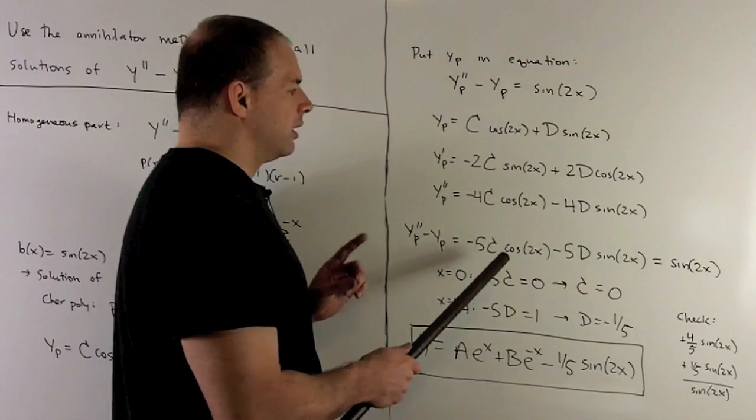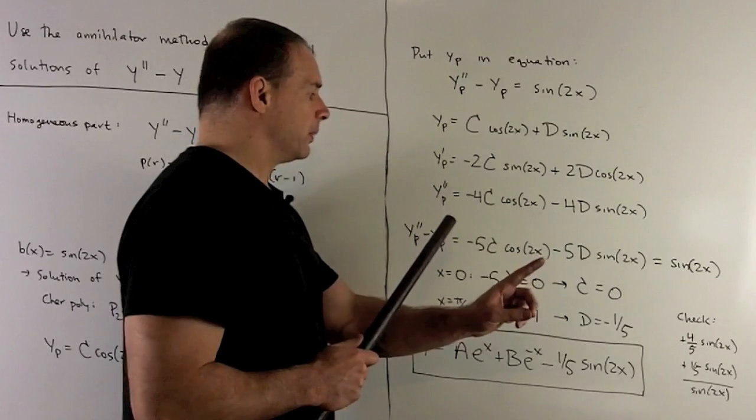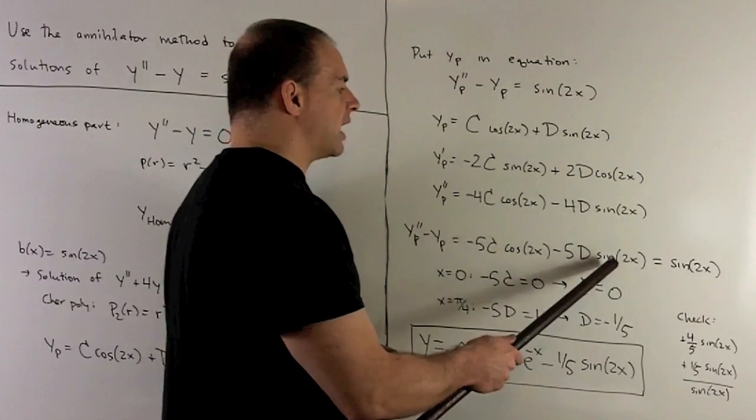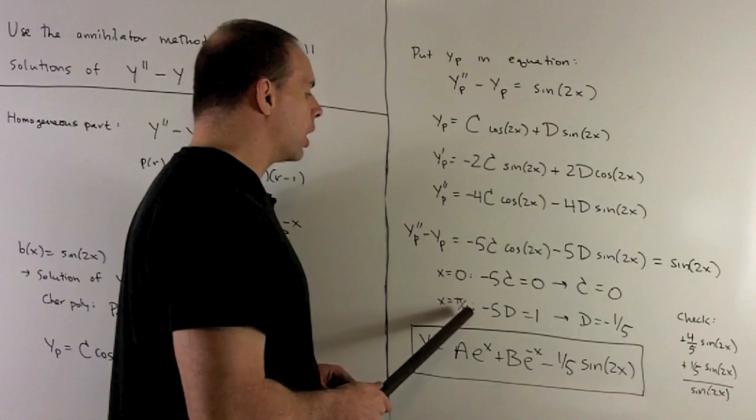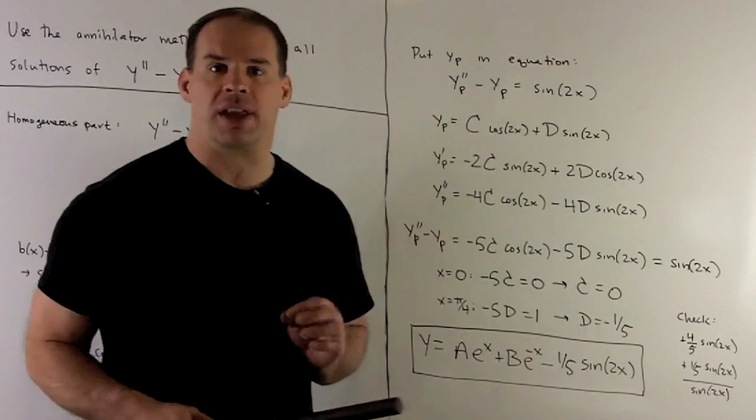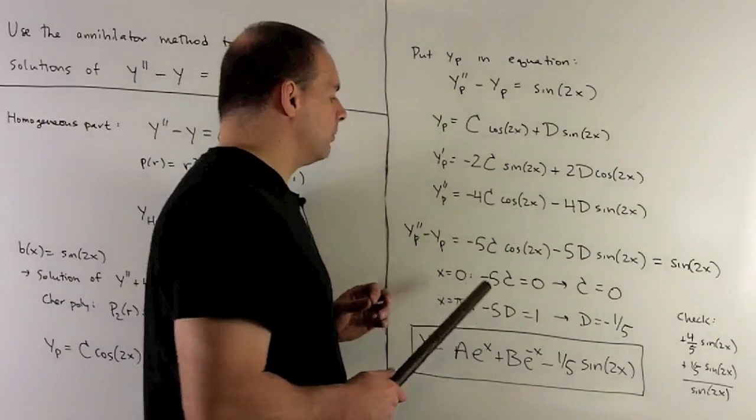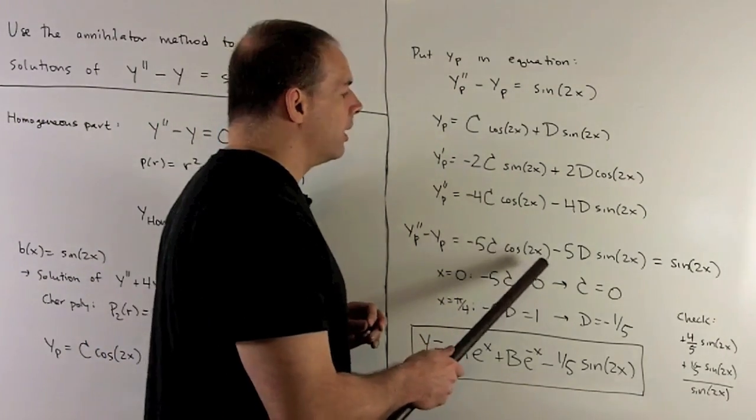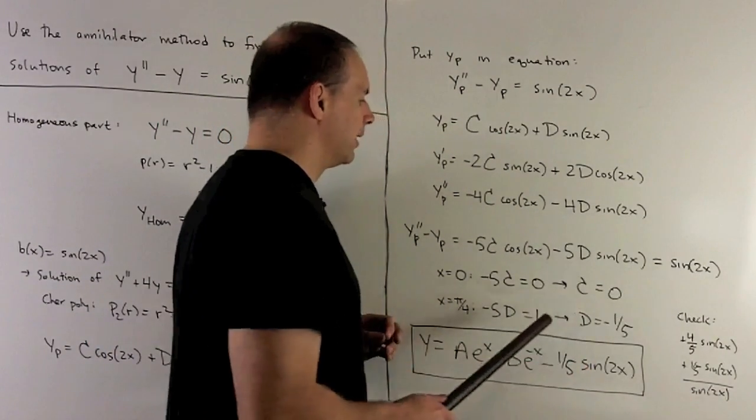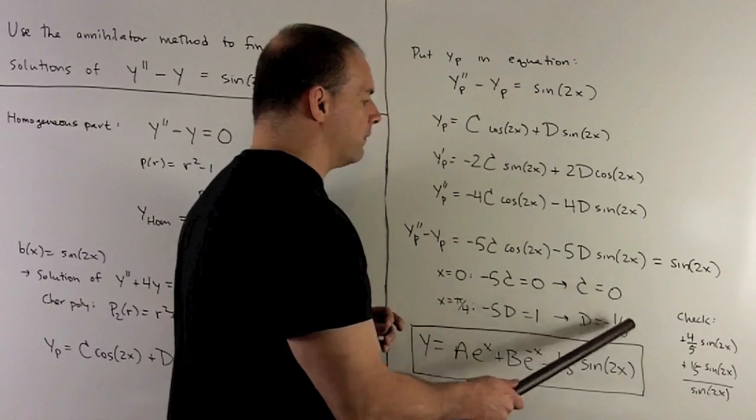Then, if I want to get things to switch, so I'd want cosine to be zero and sine to be equal to one, I'll use x equal to pi over four. Multiplying by two is going to turn that into pi halves, and then we can work with that. So, that'll give me zero, and then I have minus 5d is equal to one. Again, we get d equal to minus one-fifth.